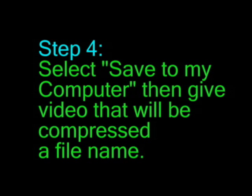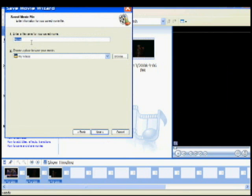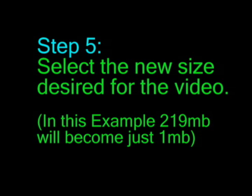Step 4: Select Save to My Computer, then give the video that will be compressed a file name. Step 5: Select the new size desired for the video. In this example, 219MB will become just 1MB.